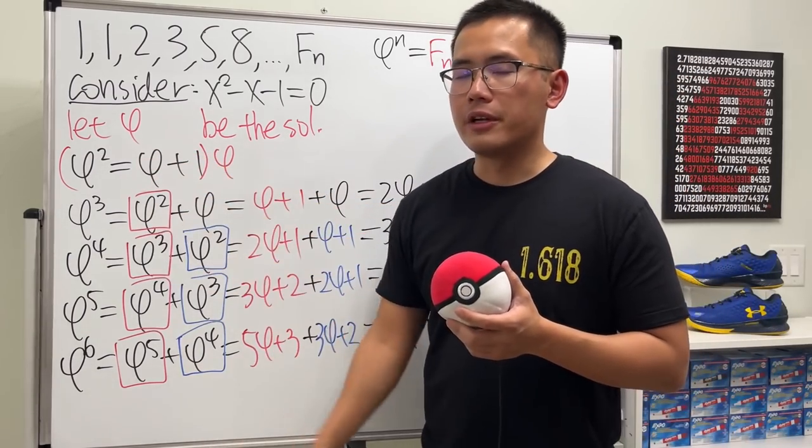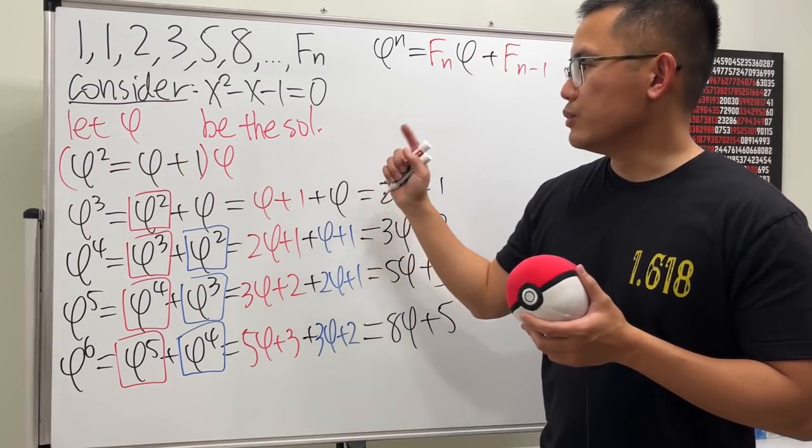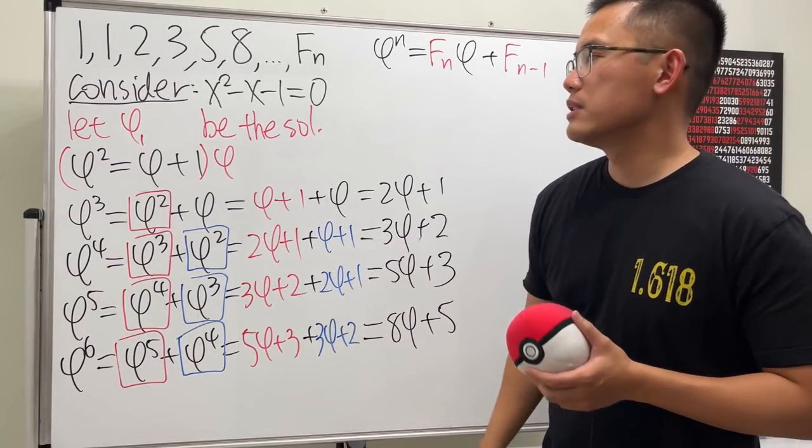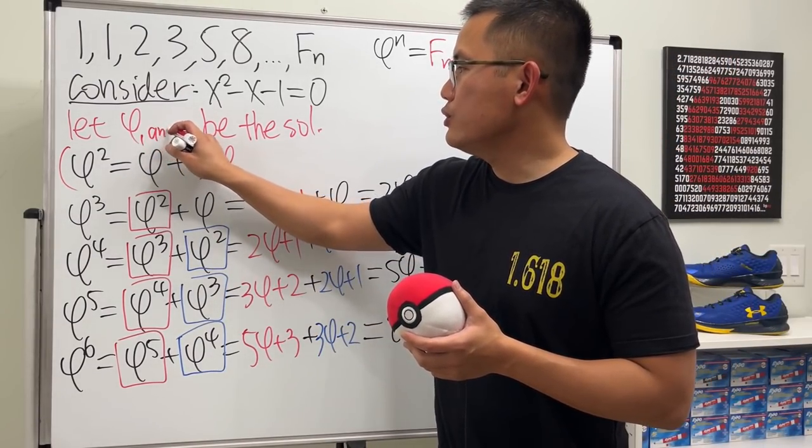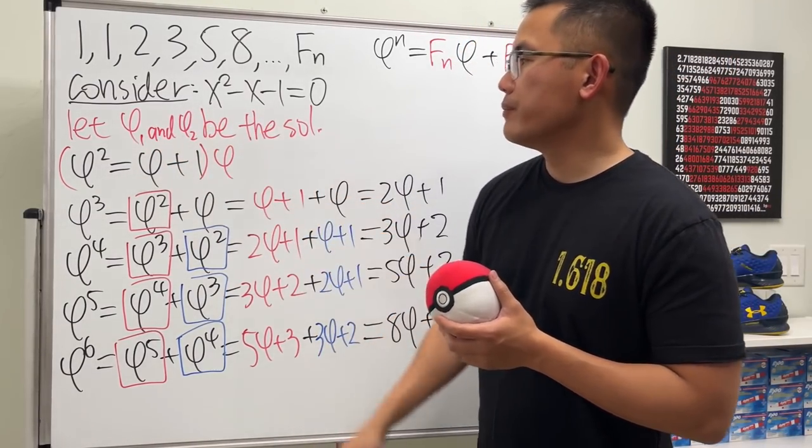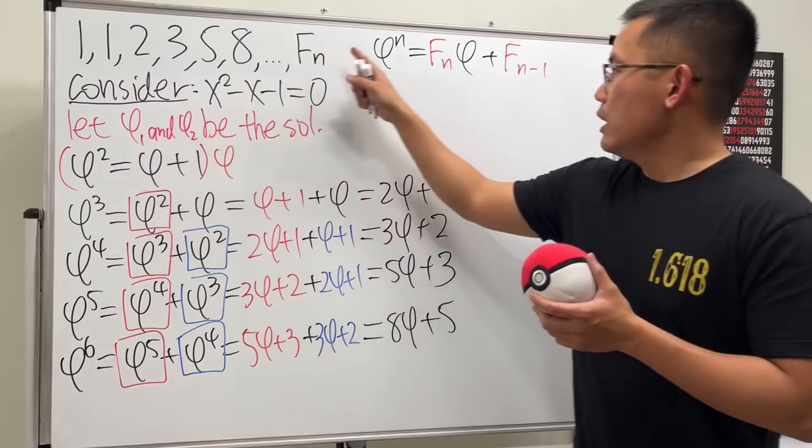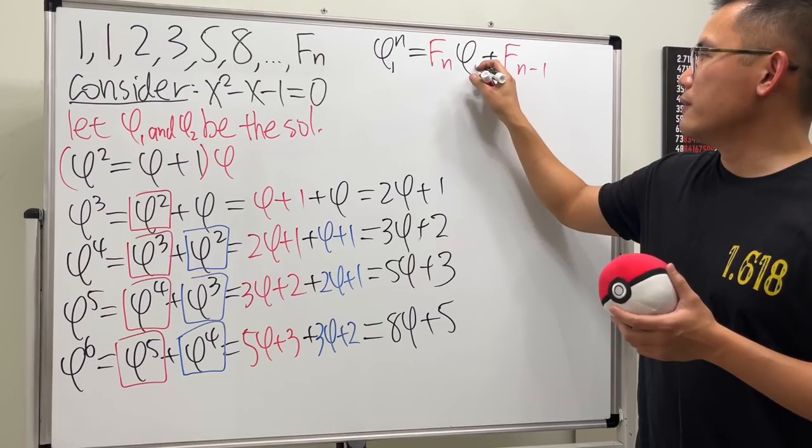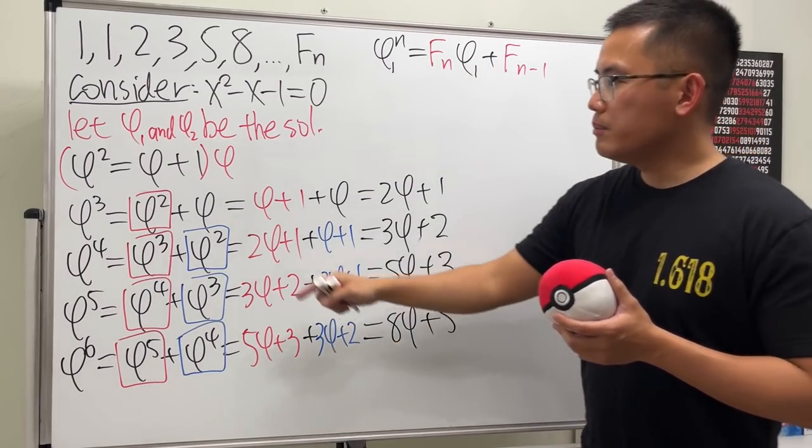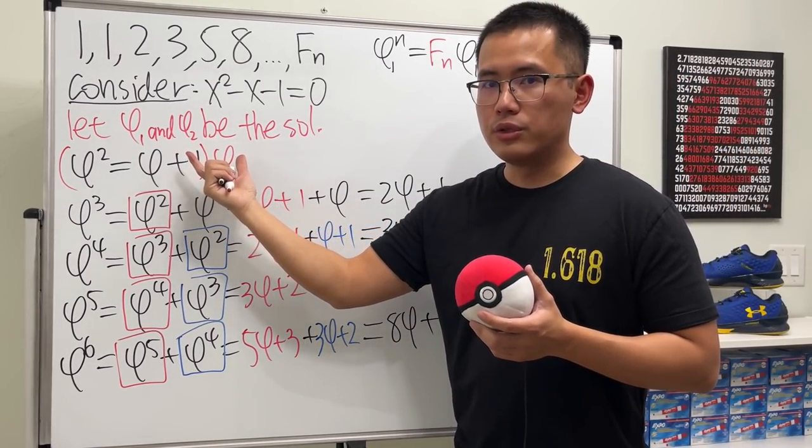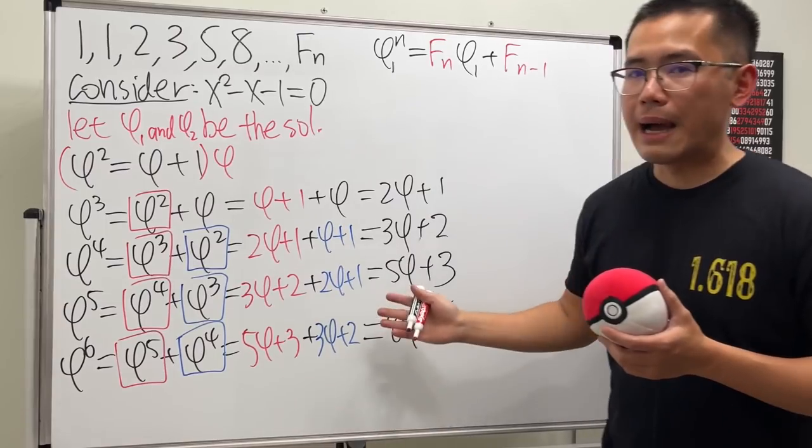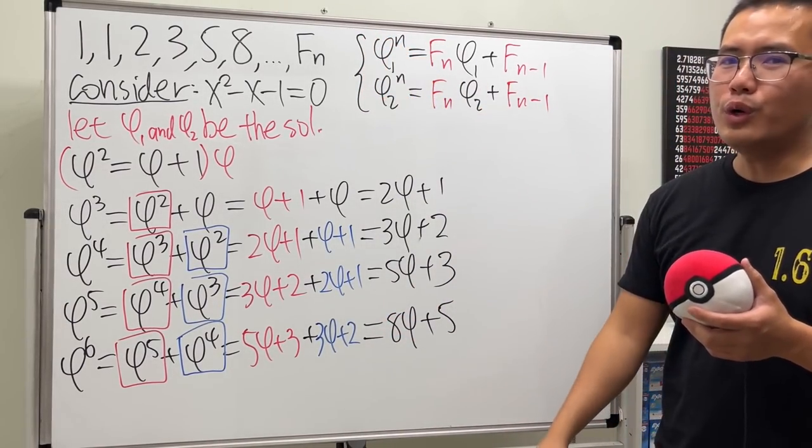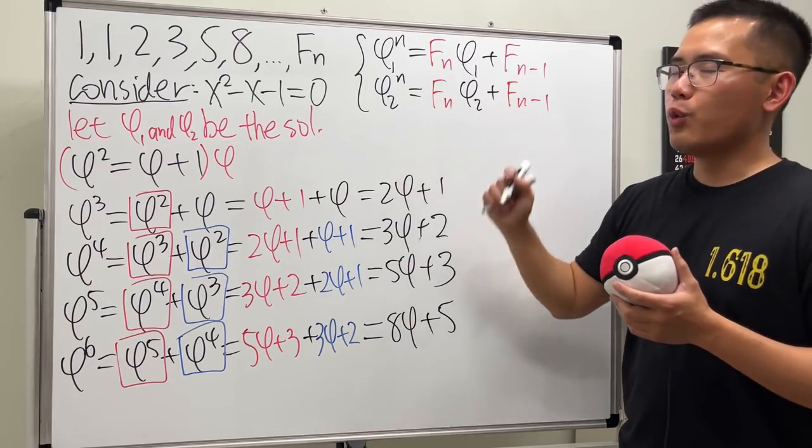Now, let's come back here again. Earlier, we said let φ be the solution. And technically, we should say φ₁, because we have two solutions. And the other solution, I'm just going to call that to be φ₂. So, earlier, we were just dealing with φ₁, technically. So let me just put on φ₁ and φ₁ here. And because φ₂ is a solution as well, so the same thing will happen. Aha! Now we have this kind of system equation to work with. And our goal is to find out what Fₙ is.